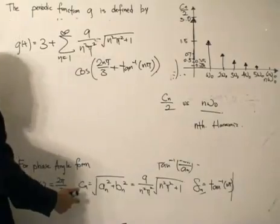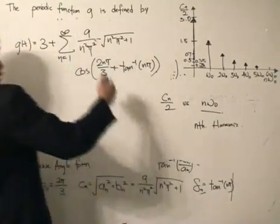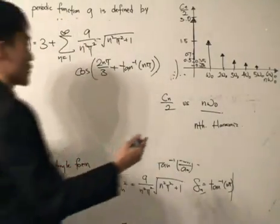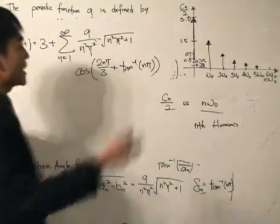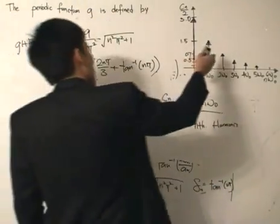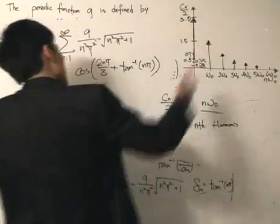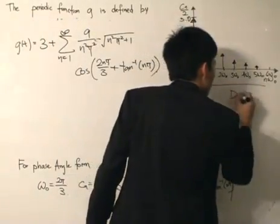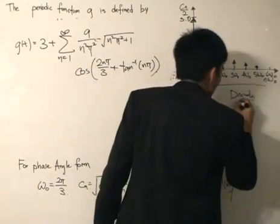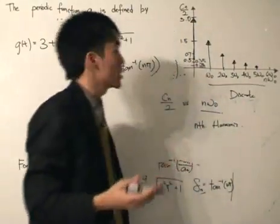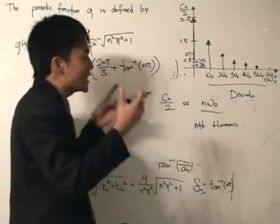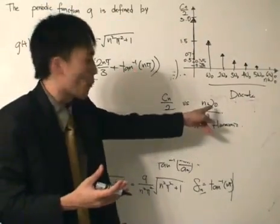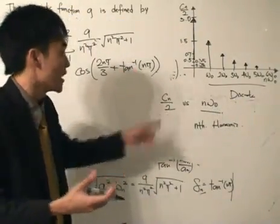It's cₙ/2. cₙ again is the harmonic amplitudes given by this over there. If I take certain values of the n-harmonic and of cₙ/2, this is the graph that we get. This is called the amplitude spectrum, and what we have over here is discrete frequencies. It's not continuous.